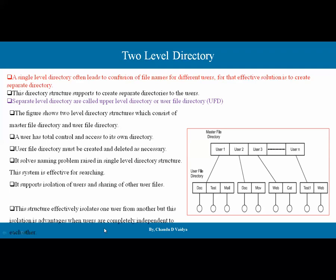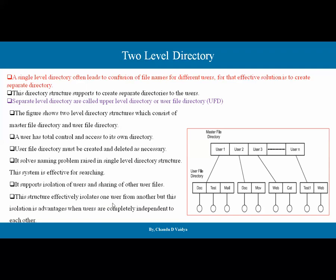This structure effectively isolates one user from another. This isolation is advantageous when users are completely independent of each other. In the two-level directory structure, one directory is the master directory where all users are registered, and users are registered within their own subfolders. Data is maintained at only two levels.